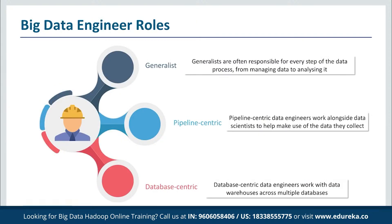Now let's look at the big data engineer roles. There are typically three kinds of roles that a big data engineer has to assume. First of all, we have the generalist. Generalists are typically found on small teams or in small companies. In this setting, data engineers wear many hats as one of the few data-focused people in a company. Generalists are often responsible for each step of the data process, from managing data to analyzing it.